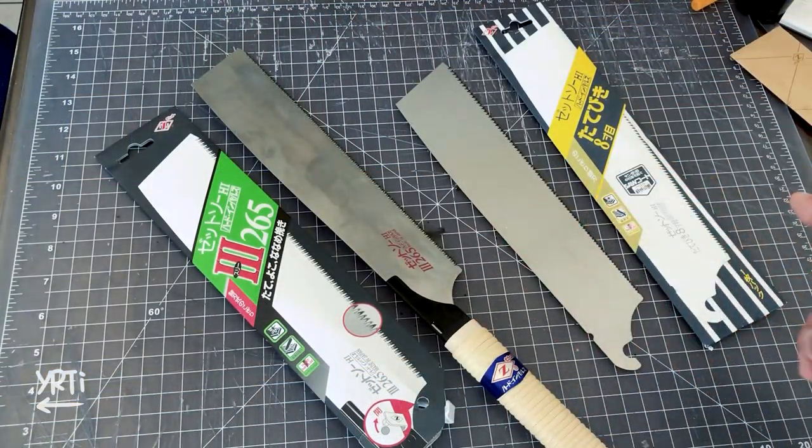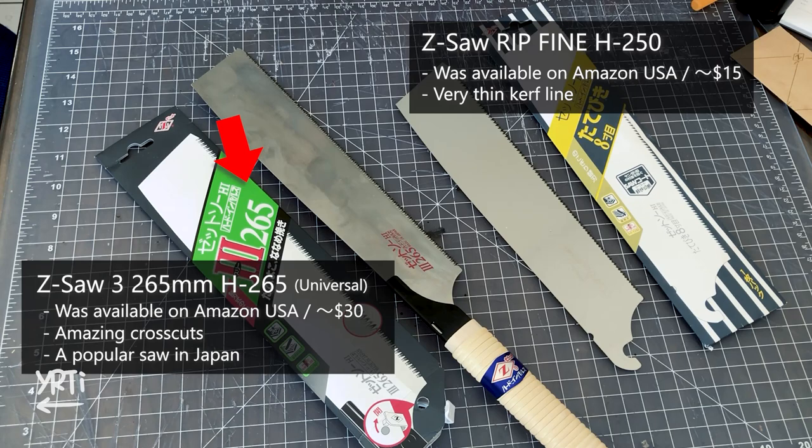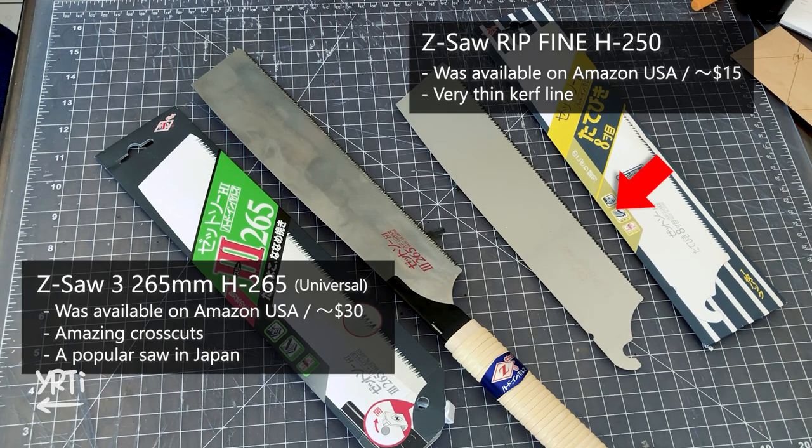And these are the saws I bought. This one is for both rip cuts and cross cuts and does an extremely good job for cross cuts. But it's only ok for rip cuts so I also bought this rip cut blade which was amazing too.